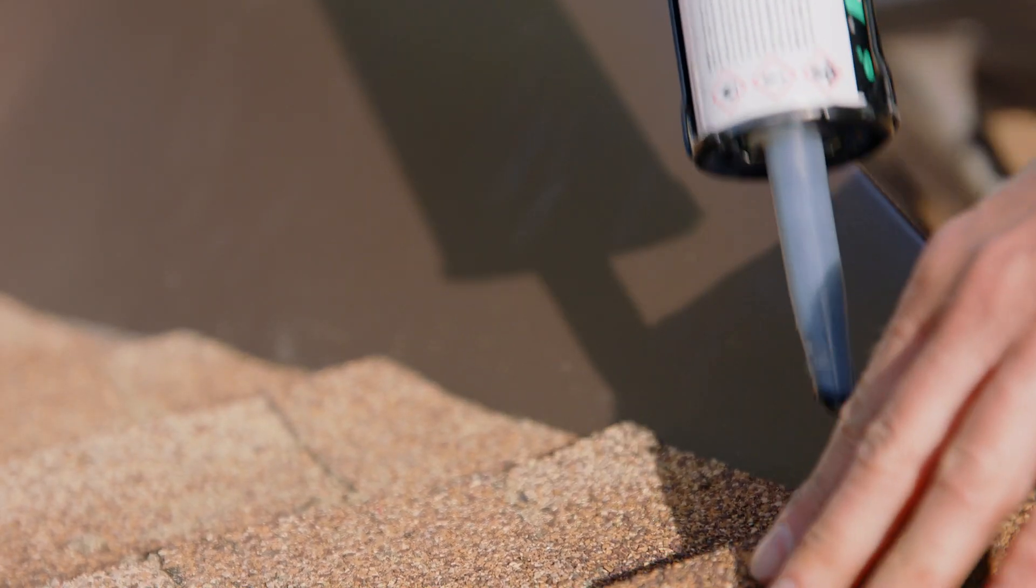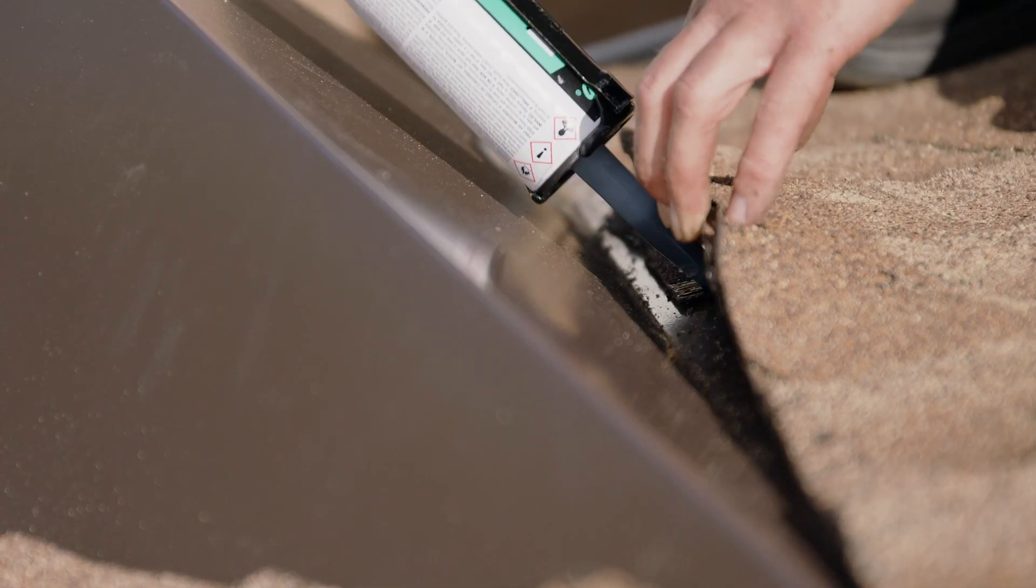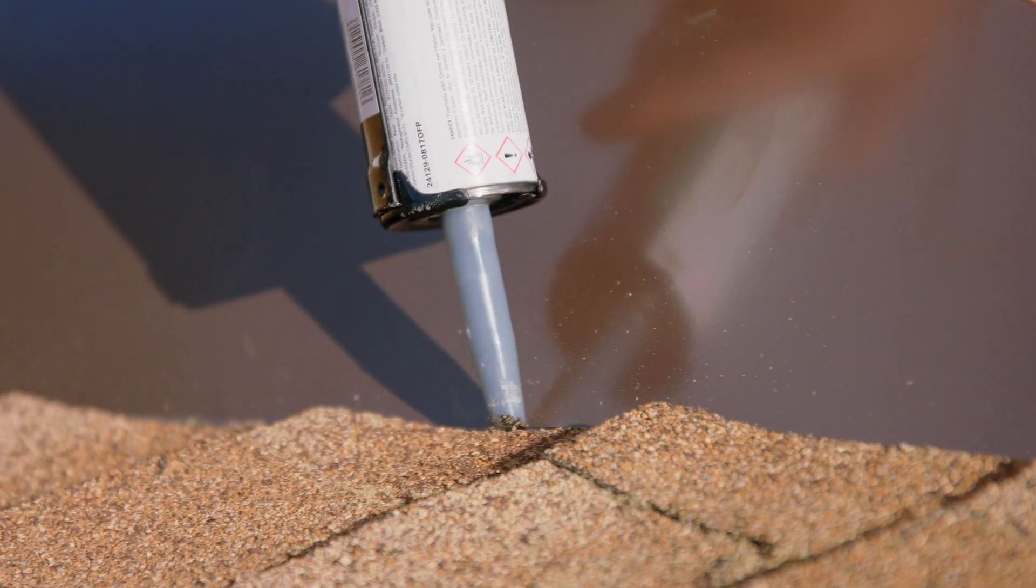The final step in installing your VMAX AT2 is to hand seal with roofing cement every joint and tab around the perimeter of the vent.